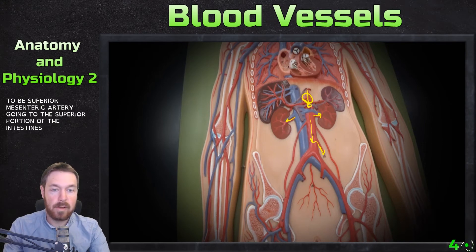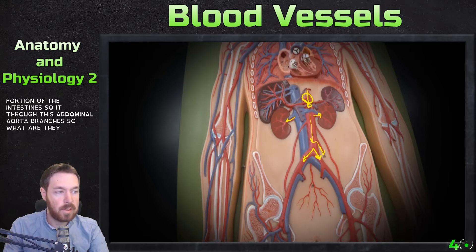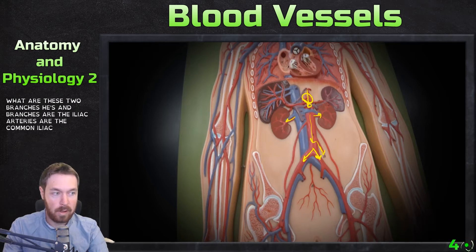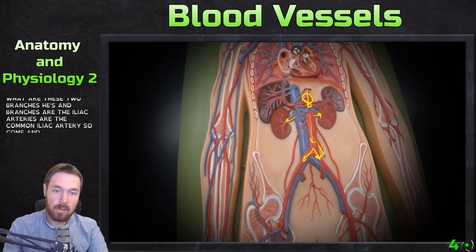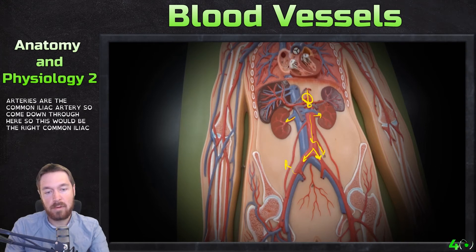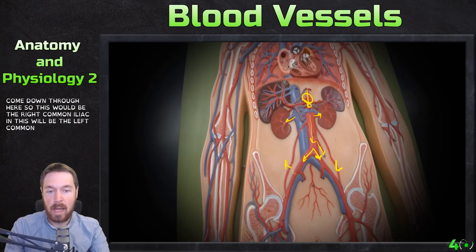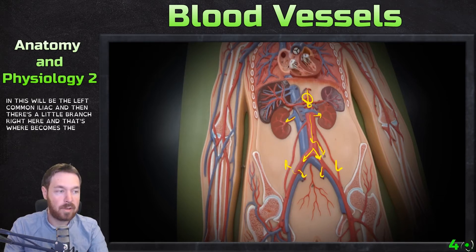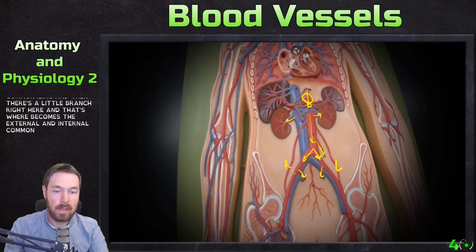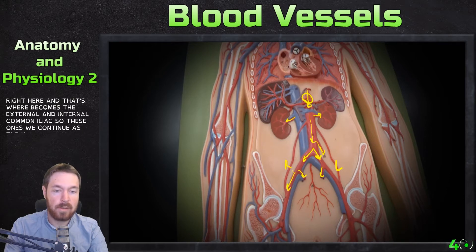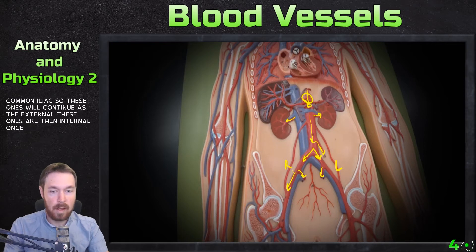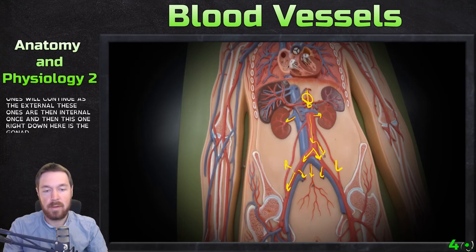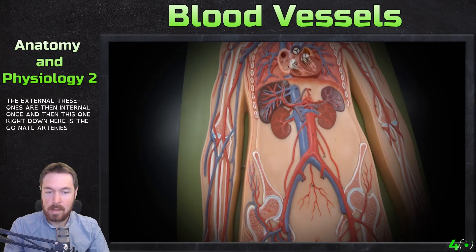Moving down through the abdominal aorta, we hit two branches — the common iliac arteries. This would be the right common iliac and this would be the left common iliac. There's a little branch where it becomes the external and the internal iliac: the external ones continue down the leg, the internal ones go inward, and right down here are the gonadal arteries.